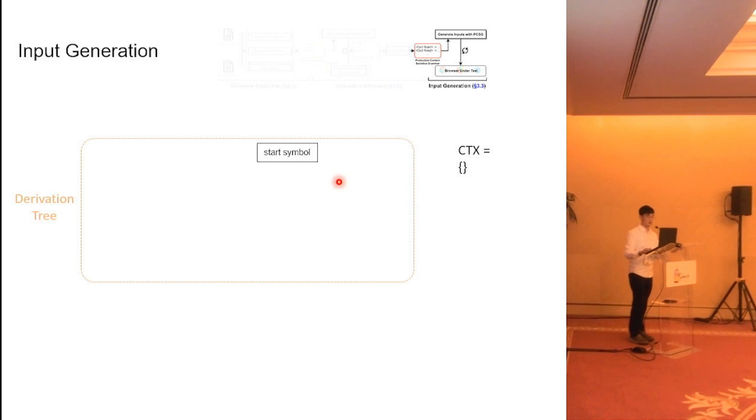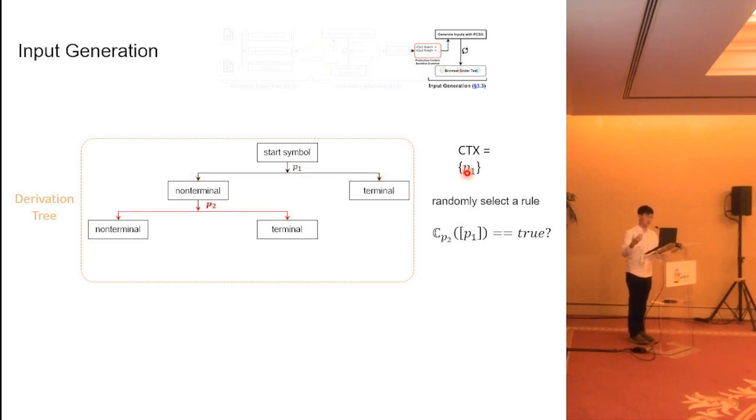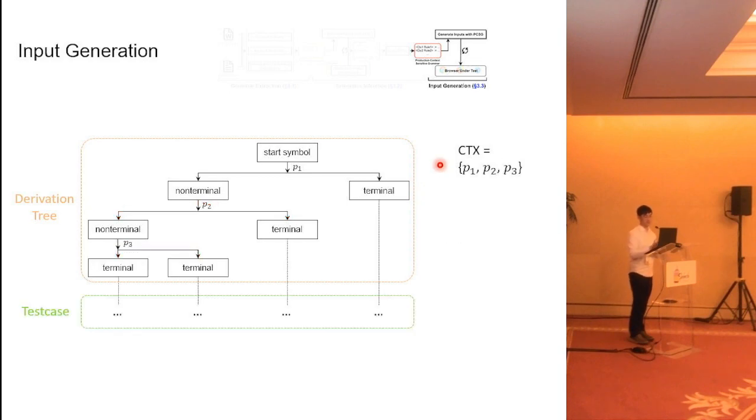We put a very simple example to illustrate how we use the PCSG to generate the test case. First, we have a start symbol and we randomly select a rule from our grammar and ask the context-checking function if it is likely to cause a semantically correct test case. If it is, then we will choose this production rule and add this rule to our context. If it isn't, we select another one until it comes up with a good choice. Recursively, we randomly select a rule and expand all the non-terminal symbols and ask the context-checking function for semantic correctness and update the context. Finally, we successfully build a semantically correct derivation tree and then we can transfer it to a test case. That's how our fuzzer works.